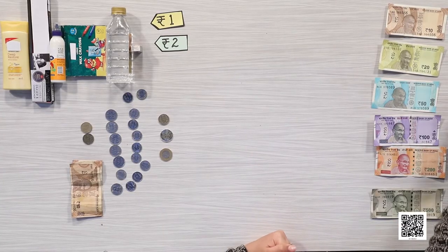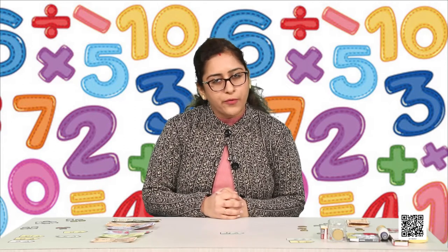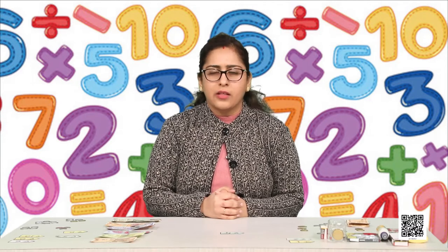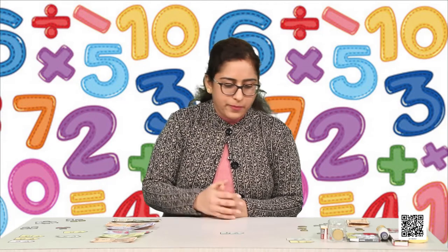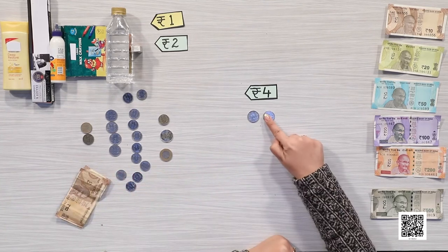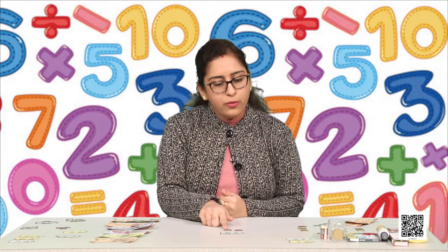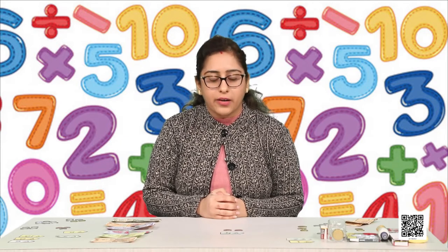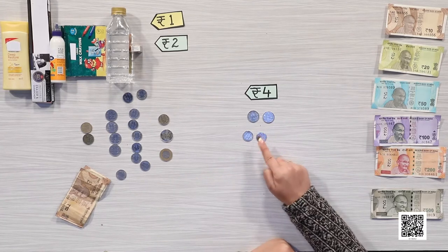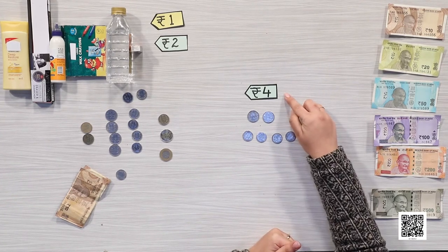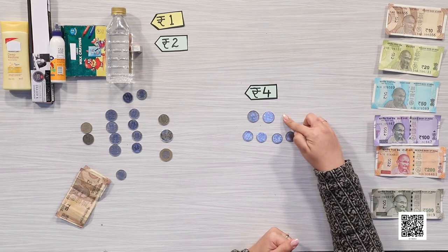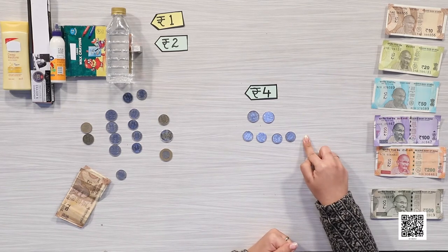If something costs rupees 4, how can we give rupees 4? Do we have a coin of rupee 4? No, we do not. So we can give 2 coins of rupee 2 - 2 and 2 makes 4. We can also give 4 coins of rupee 1: 1, 2, 3, and 4. So if we want to give rupees 4, we can give 2 coins of 2 rupees or 4 coins of 1 rupee.